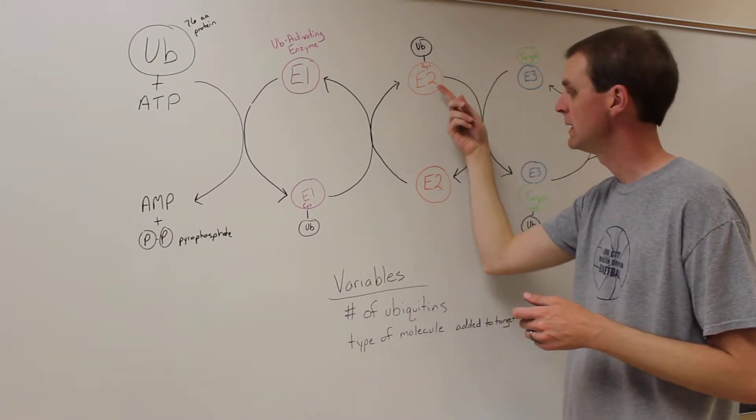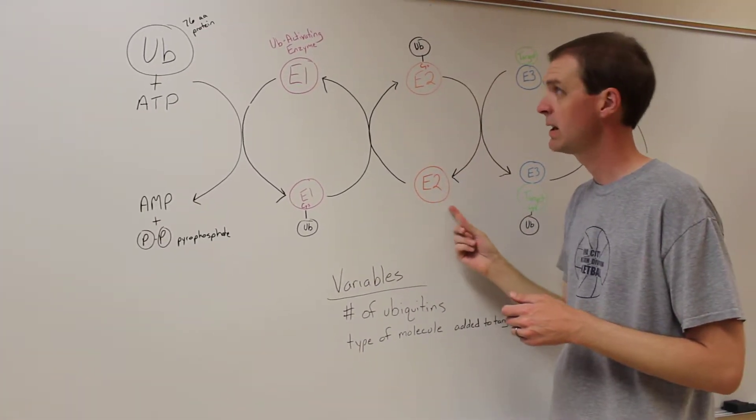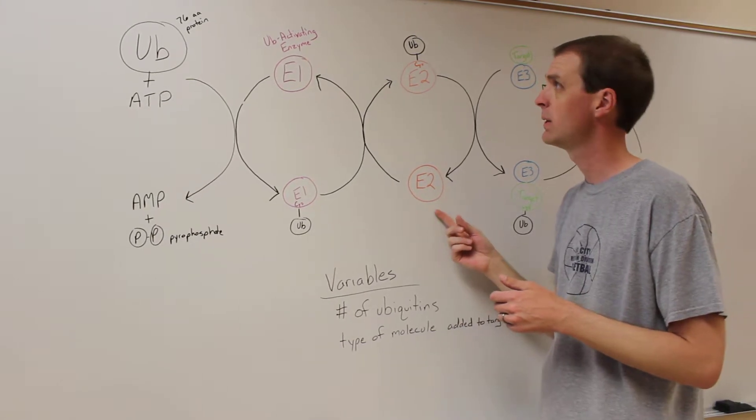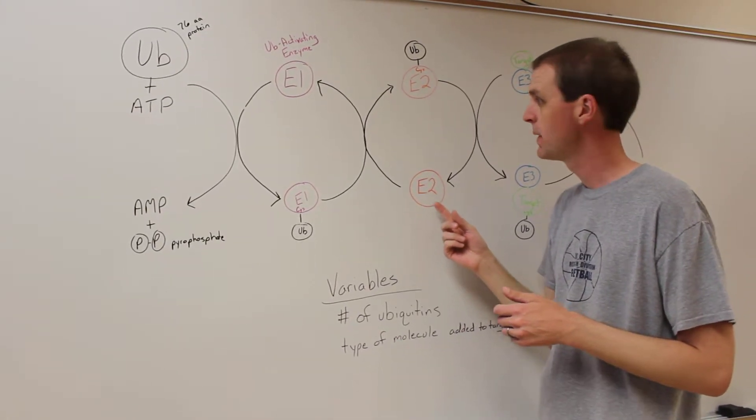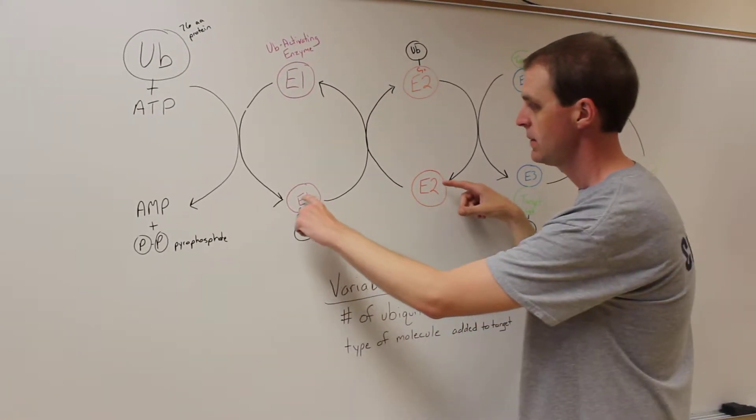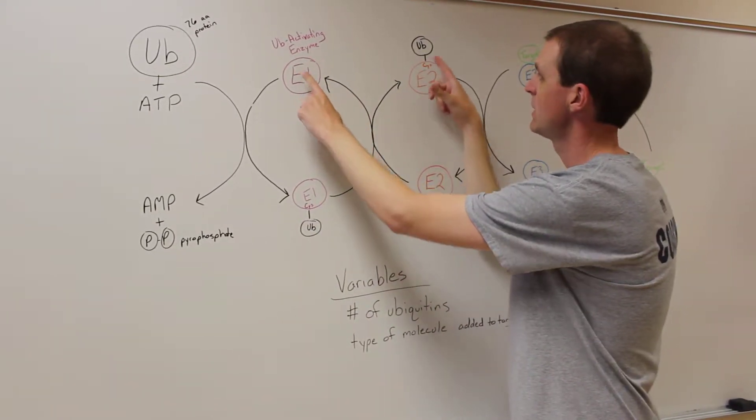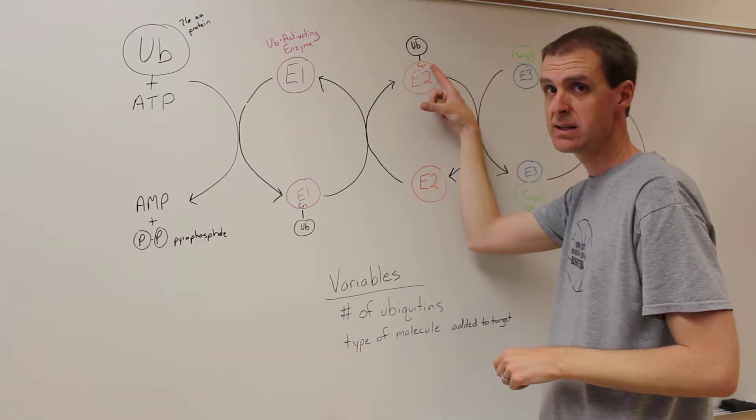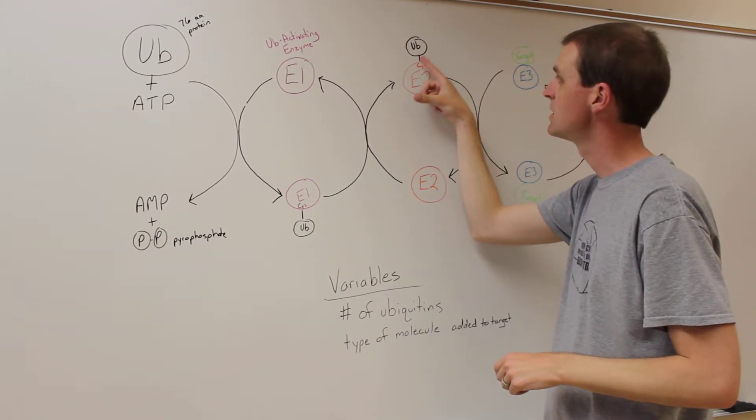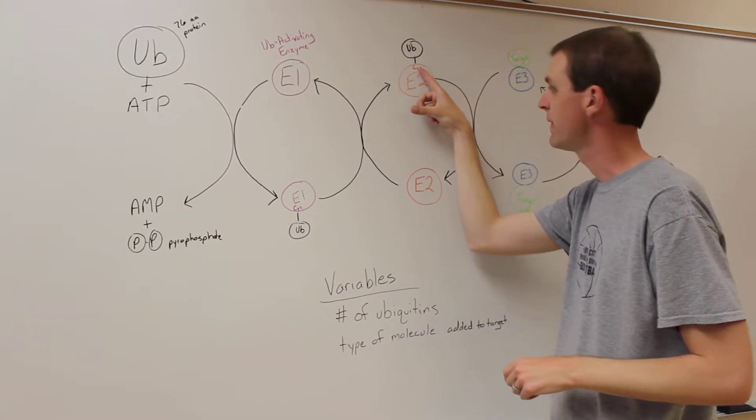And I didn't write it here but the E2 is called the ubiquitin conjugating enzyme. So the E1 that has the ubiquitin interacts with the E2, the E1 loses the ubiquitin and now the E2 has the ubiquitin conjugated to also a cysteine on that protein.